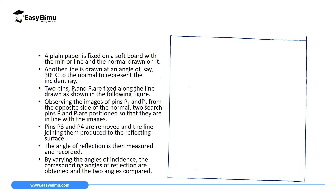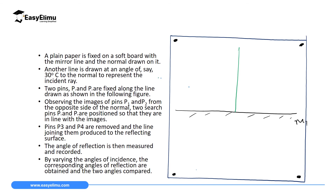We have an experiment you can perform to verify the laws of reflection. Take a plain paper and fix it on a soft board using an obvious pin. Take your ruler and draw a mirror line — label it M1. Then draw a line which is 90 degrees to that mirror line, which you call the normal line.